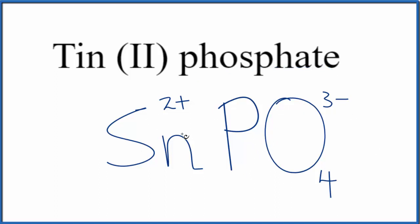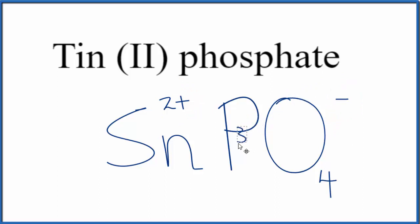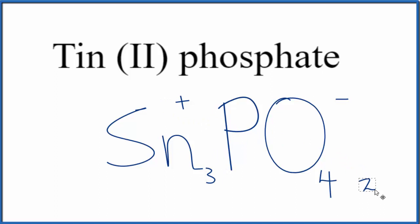So we have metal and non-metals — this is an ionic compound. These charges need to balance, and we'll use a little trick to make this a lot easier. We'll take the 3, move it down here, and the 2 out here. It's called the crisscross method.